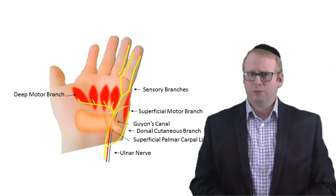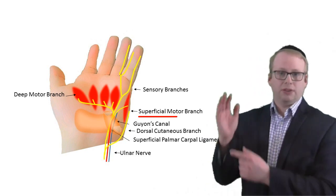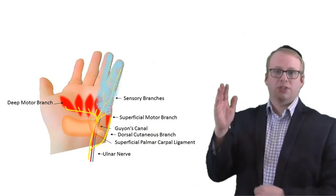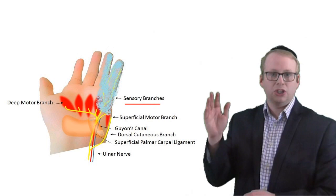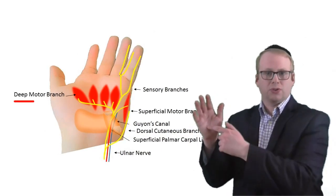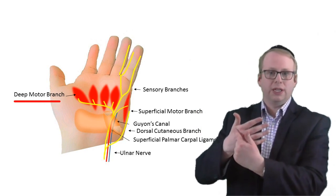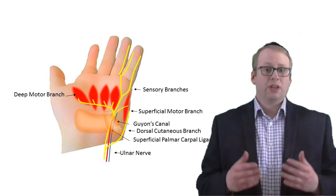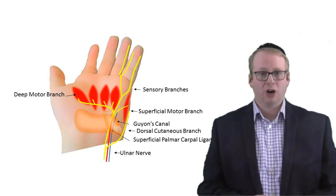There are three main branches. A superficial motor branch, which runs to the ADM muscle at the side border of the hand and opens the little finger outwards. There are sensory fibres to the little and half of the ring finger, which provide sensation. And a deep motor branch, which runs to the various intrinsic muscles of the hand, and most importantly, the first dorsal interosseous muscle, which opens the first finger outwards. These are then covered by a hood called the superficial palmar carpal ligament, which forms the roof of Guyon's canal.